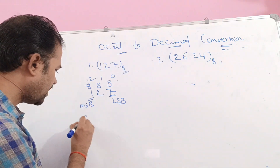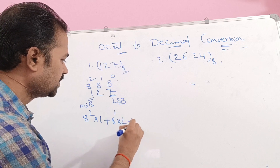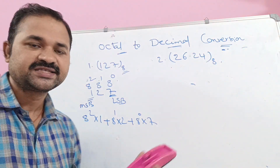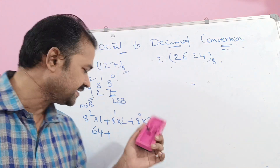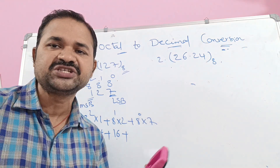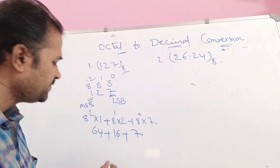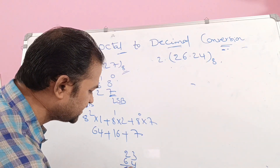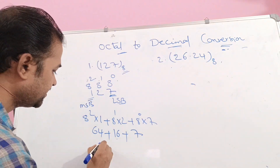8 power 2 into 1, plus 8 power 1 into 2, plus 8 power 0 into 7. 8 power 2 means 64; 64 into 1 is 64. 8 power 1 means 8; 8 into 2 means 16. 8 power 0 equals 1; 1 into 7 means 7. So 16 plus 7 means 23, and 23 plus 64 means 87. The result is 87.